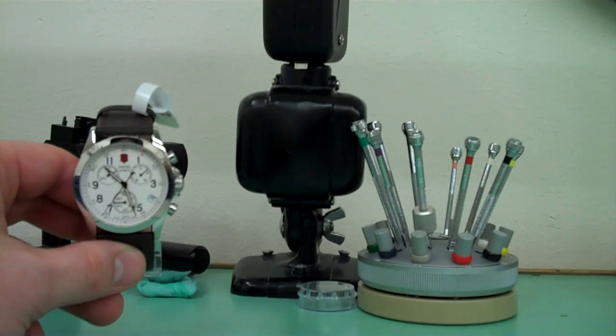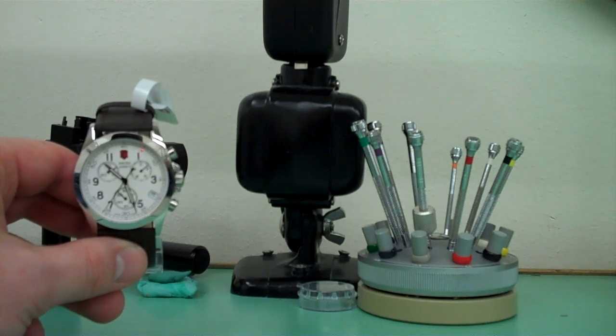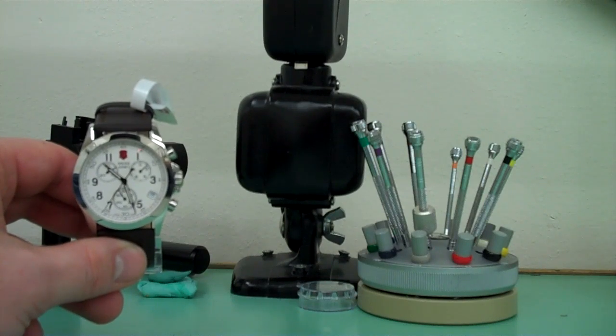Tag Heuer uses a variation of this, Swiss Army, Tissot, Hamilton, just any Swiss chronograph with an ETA movement should reset in a similar fashion to this, as well as some of the Japanese models.